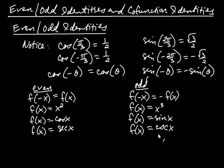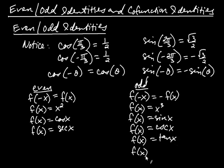Tangent and cotangent are both odd as well. So all six trig functions are either even or odd. The only two even functions are cosine and secant; all the others are odd.